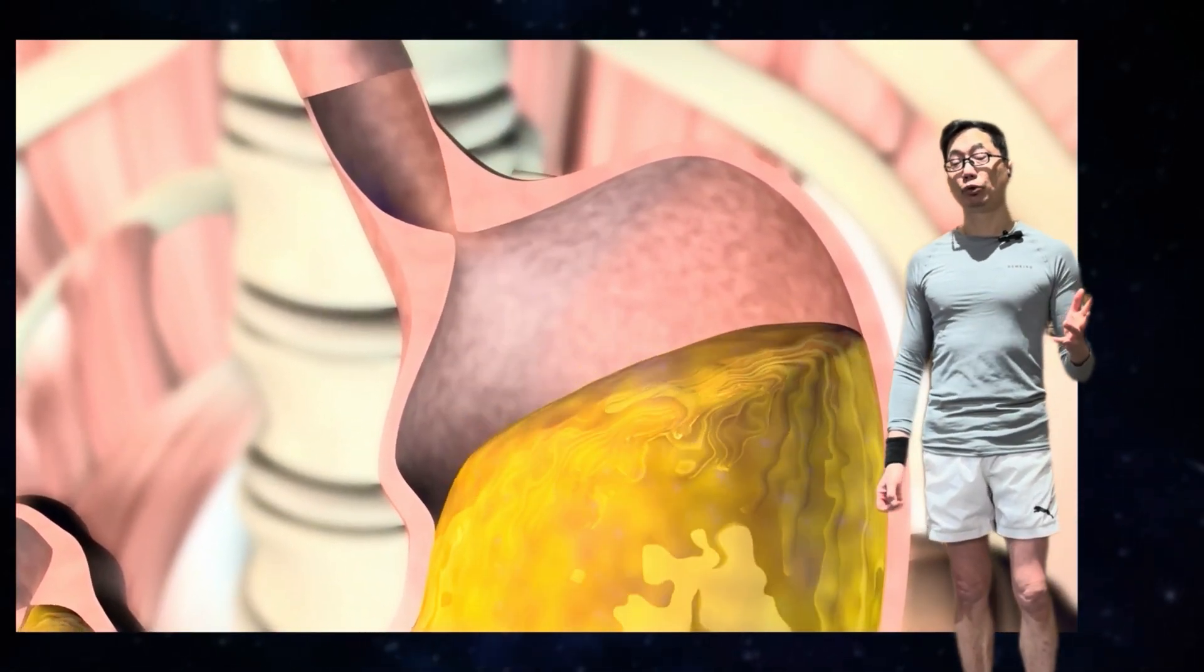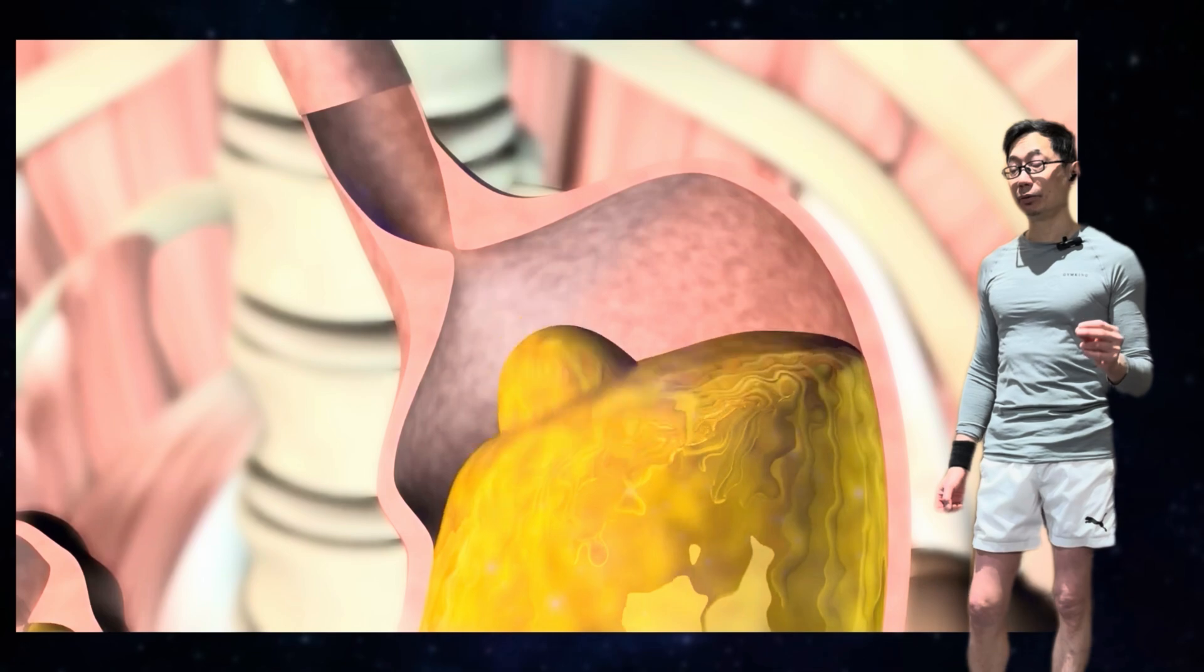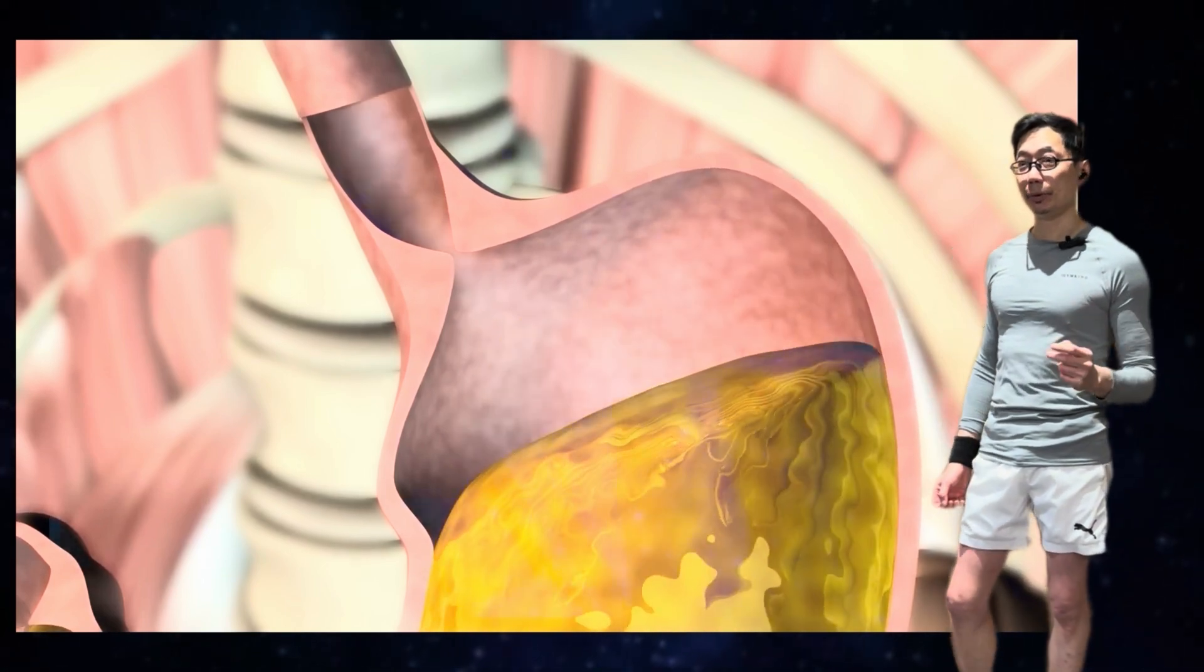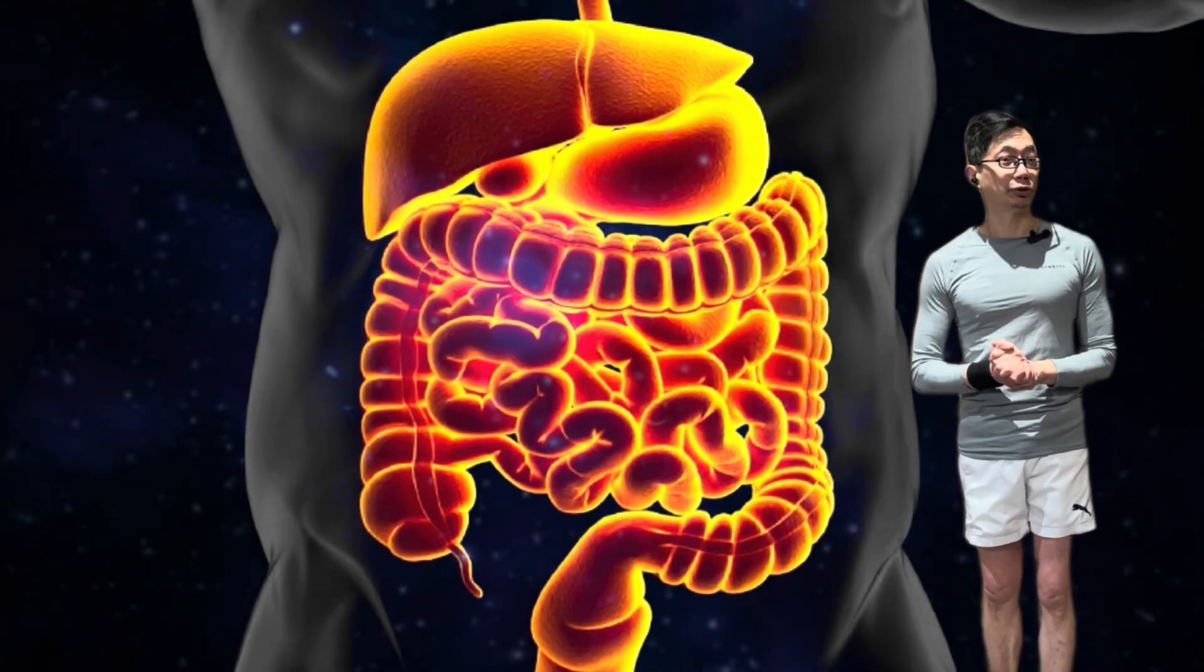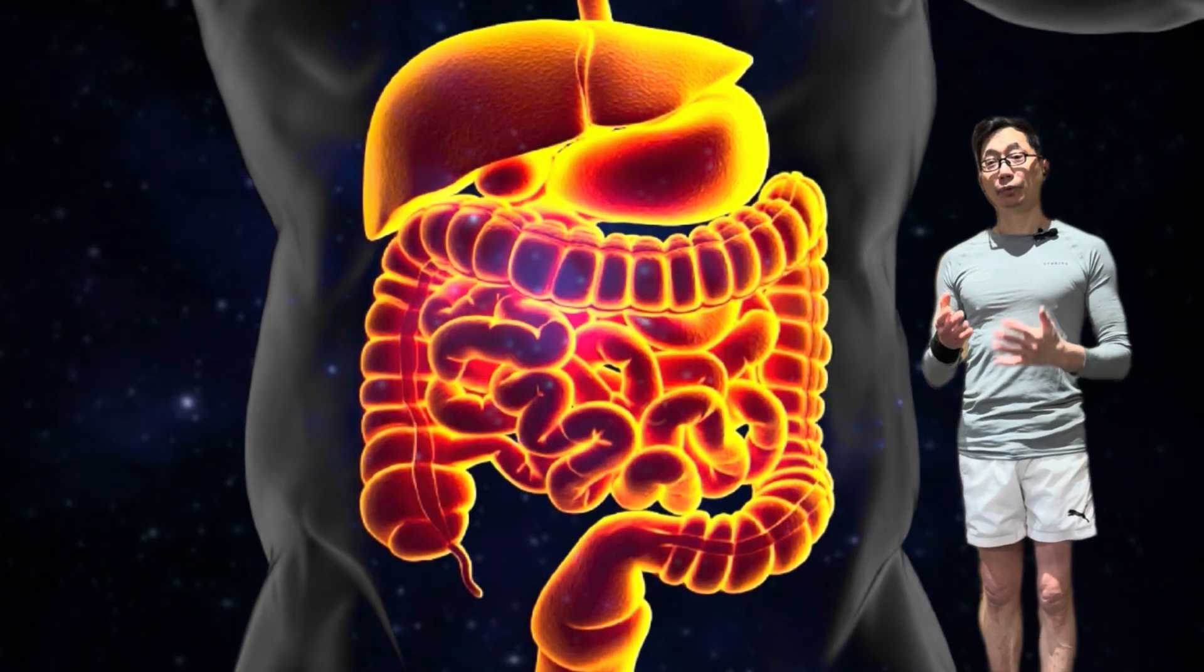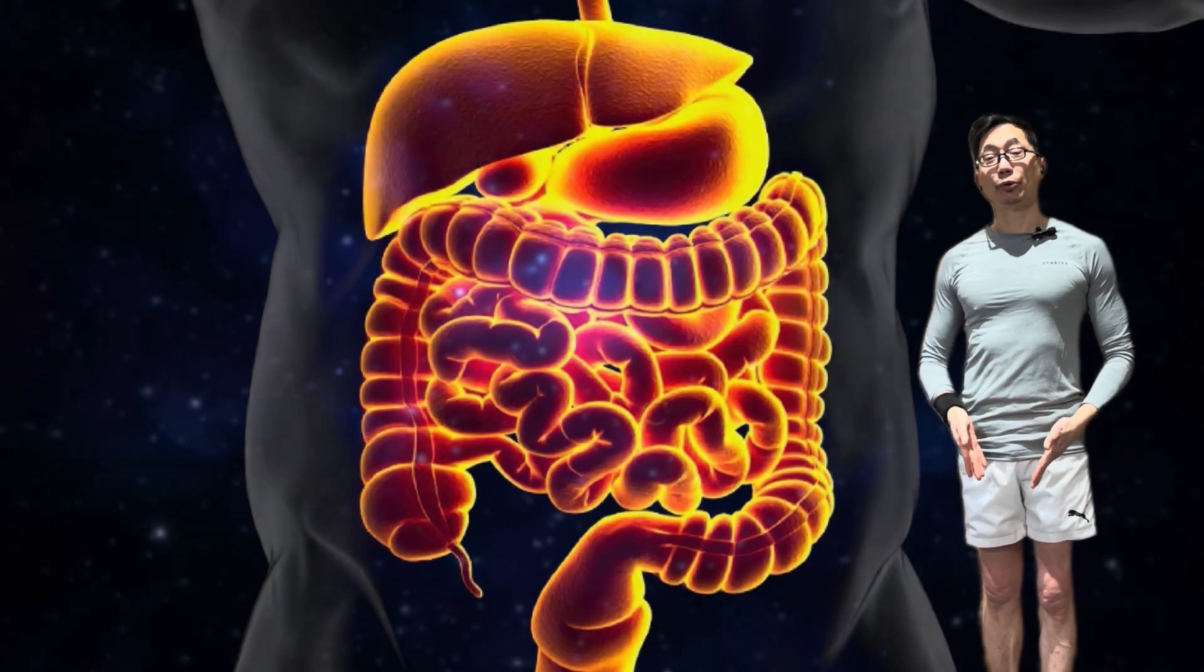With the stomach juices, we call it chyme. Now again, like the mouth, something can be absorbed through the stomach, such as certain medications, even a little alcohol and fluids. But primarily, we are dealing with digestion here, and the protein still needs to move further downstream before it can be absorbed.